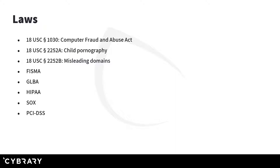We talked about the Computer Fraud and Abuse Act earlier — it's kind of that umbrella law that federal law enforcement agencies might use if you start hacking systems you don't have permission to access. We also have title 18 United States Code subsection 2252A, which covers child pornography, as well as subsection 2252B that covers misleading domains.